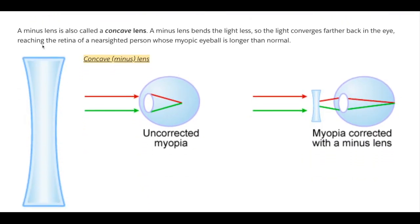A minus lens is also called a concave lens. A minus lens bends the light less so the light converges farther back in the eye, reaching the retina of a nearsighted person whose myopic eyeball is longer than normal. Concave lenses help myopia or nearsightedness — because the eye is too long, light doesn't hit the retina properly. When light enters through a concave lens, it corrects this and converges farther back in the eye.